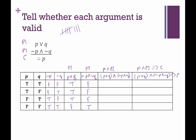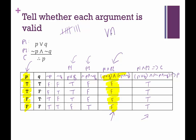Now for the conjunction of the premises, we need both to be true. True and false is false. True and false is false. True and false is false. False and true is false. Looking at our final implication — we only have falses in the conjunction column, which means all of the final column entries are going to be true because if the hypothesis is false, the conditional statement is true. So we again end up with a tautology, and this argument is valid.